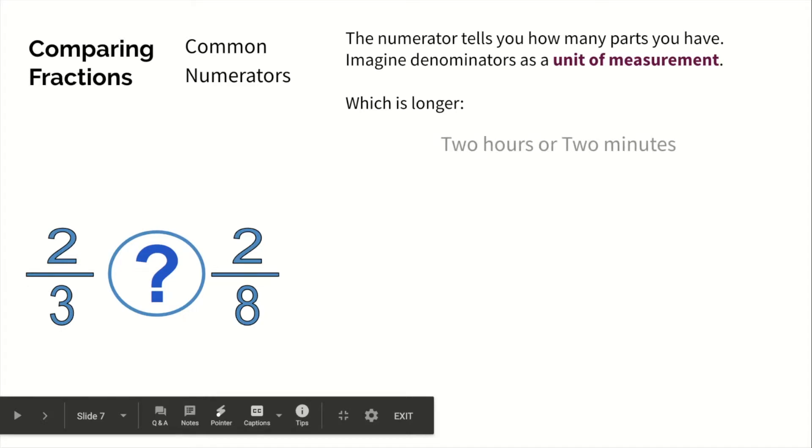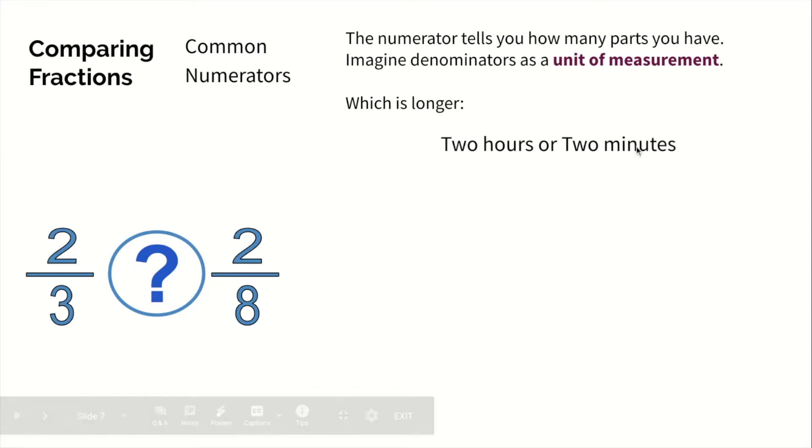For example, that's like comparing two hours to two minutes. They both have two parts, two and two, but this time our unit is different. So in this situation, you just go with the larger unit. Two hours is way more than two minutes.